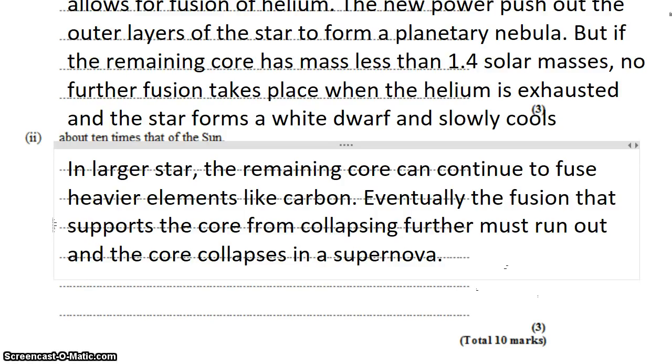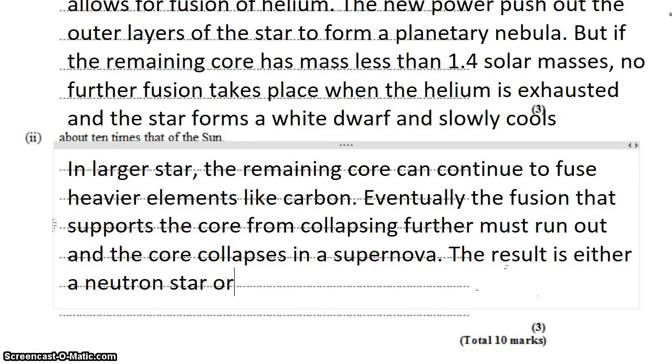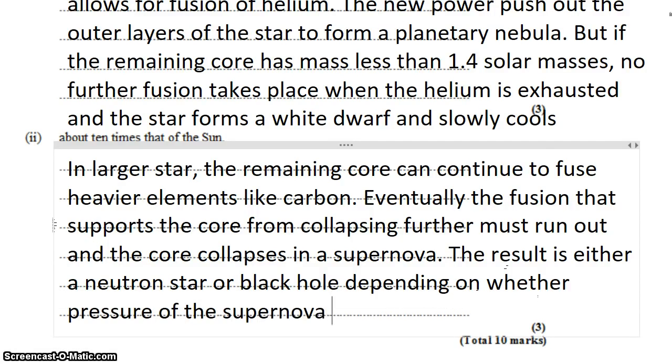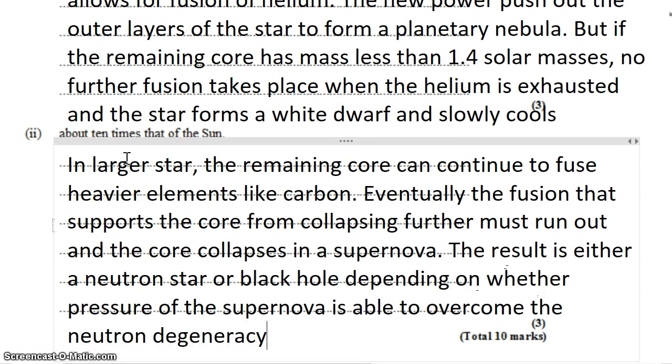Depending on the mass of the core, the result is either a neutron star or black hole, depending on whether the pressure of the supernova is able to overcome the neutron degeneracy pressure and form a black hole.